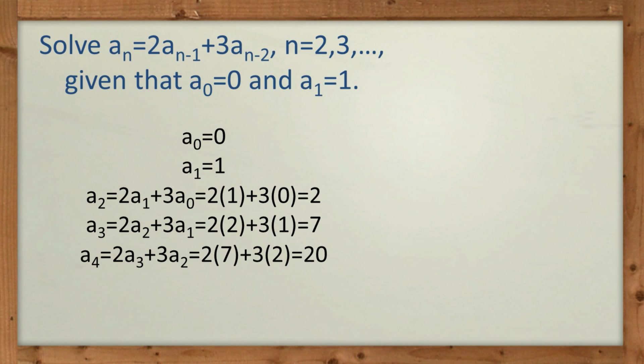And then this recurrence tells us how to generate each subsequent A. So for A2 we just put 2 times A1 plus 3 times A0 and we get 2. And then you can see for A3 we get 7, A4 we get 20. So that's how the recurrence works.